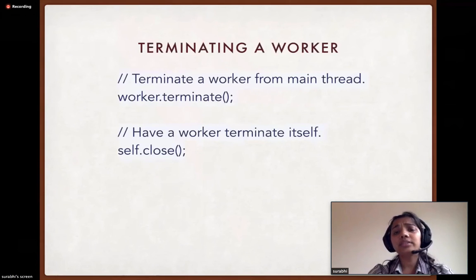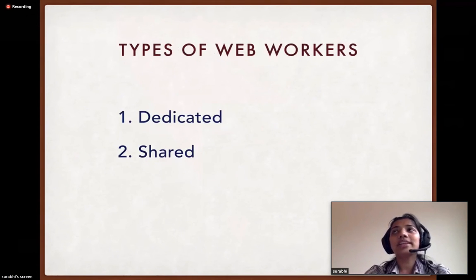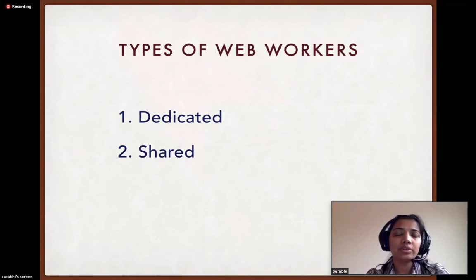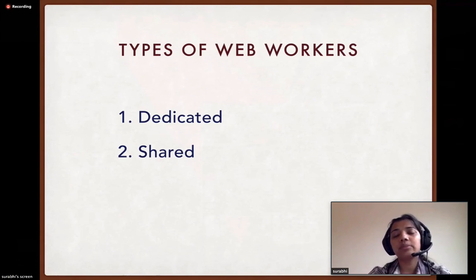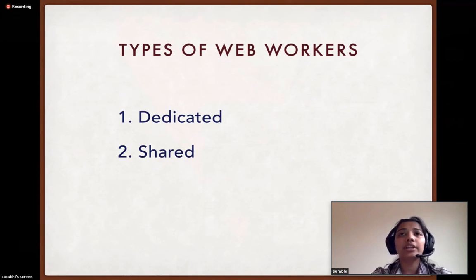A worker thread can be terminated from the main thread using worker.terminate or from the worker thread itself using self.close. Web workers can be of two types: dedicated or shared. A dedicated worker is used by only one single main thread and is spawned using the regular worker constructor. A shared worker can be shared between more than one main thread and is spawned using the shared worker constructor, communicating via a port.